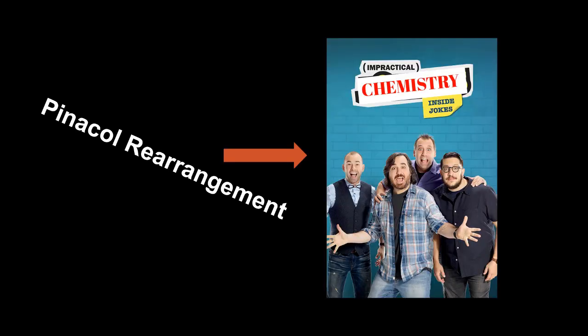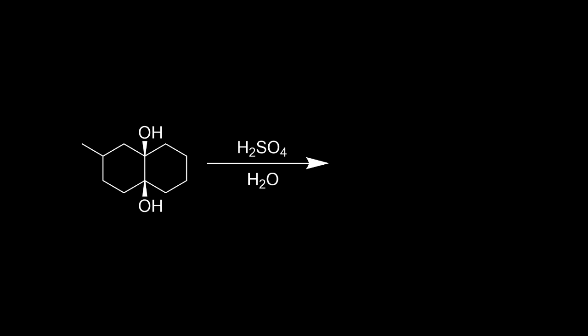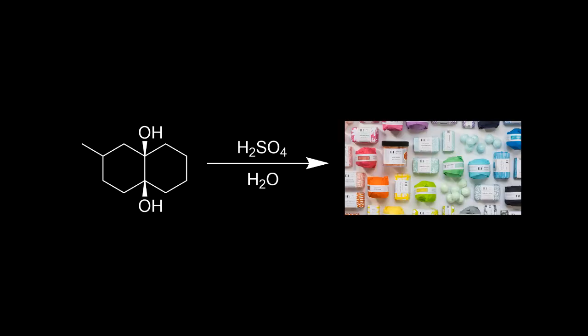This rearrangement is interesting, but it's certainly impractical. Selectivity is an obvious issue — if either ring in the previous example had any unique substituents, we would get a mixture of products rather than a single desired product. If we want something a bit more useful, we need to be a bit more creative. This and more are addressed by the next reaction.